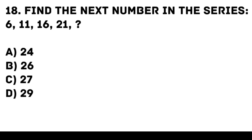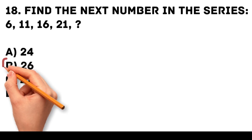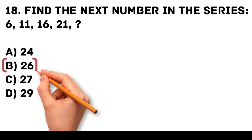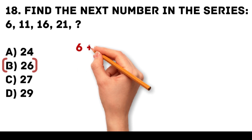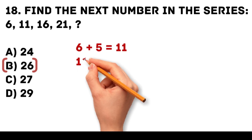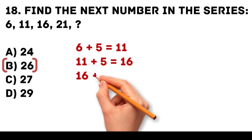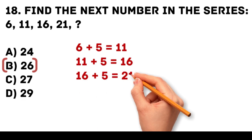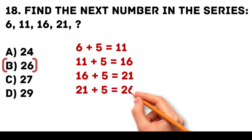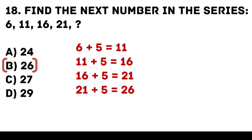Answer: B. 26. Each number in the series is increased by 5. 6 plus 5 is equal to 11. 11 plus 5 is equal to 16. 16 plus 5 is equal to 21. 21 plus 5 is equal to 26.